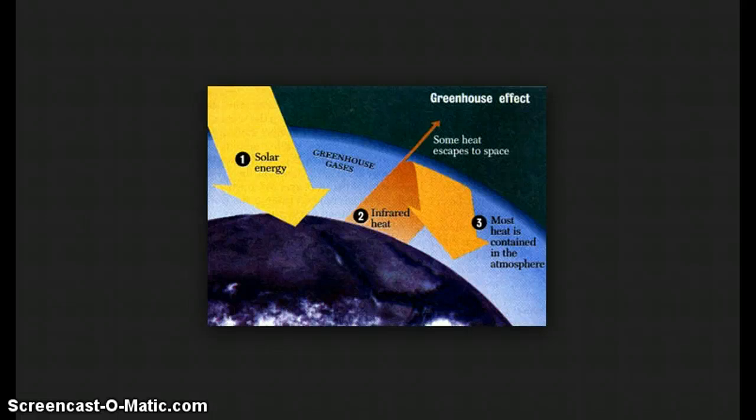I hope you guys are ready for another rockin' video brought to you by yours truly, Mrs. Munson. Today we are going to talk about how the temperature of ocean currents affects the climate of cities located on these different ocean currents, or in other words, how it affects their temperature and precipitation.